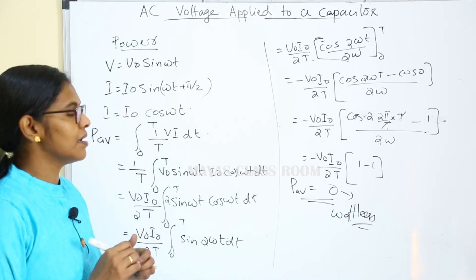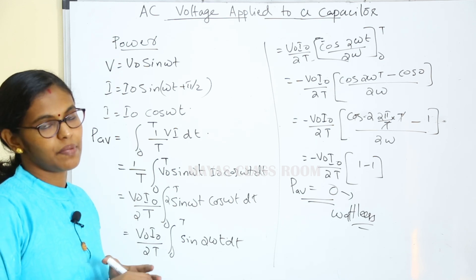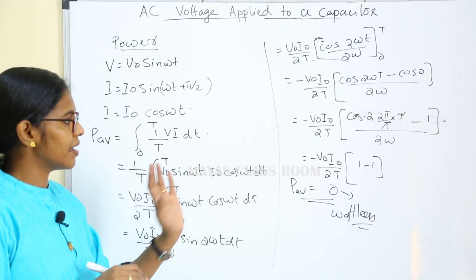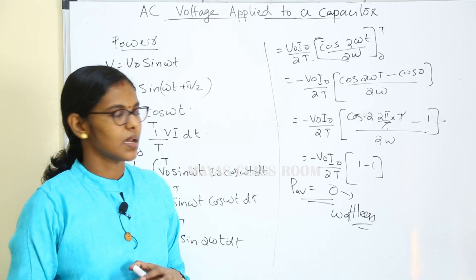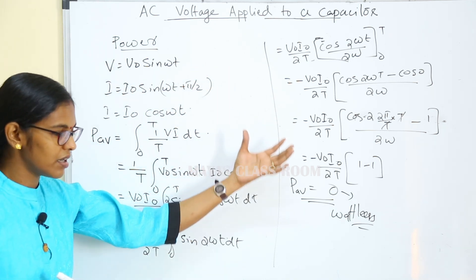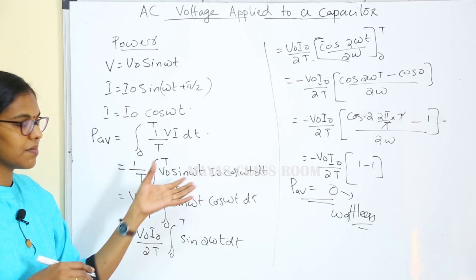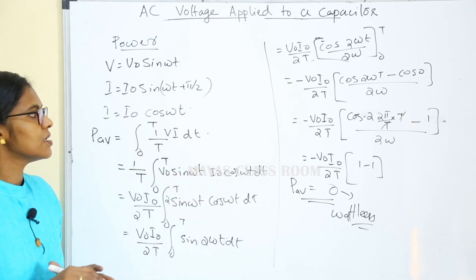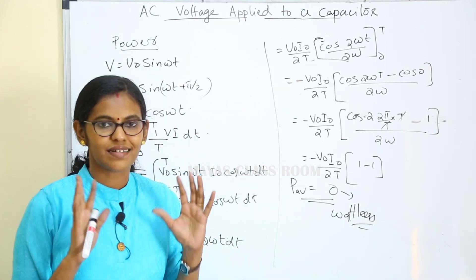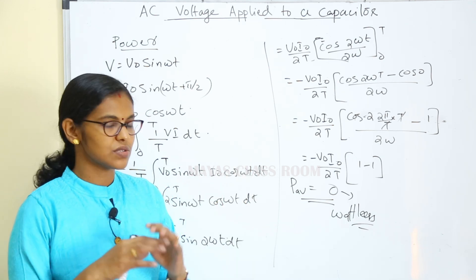When the power is applied in a purely capacitive circuit, the average power is zero. It is clear that the average power is zero.